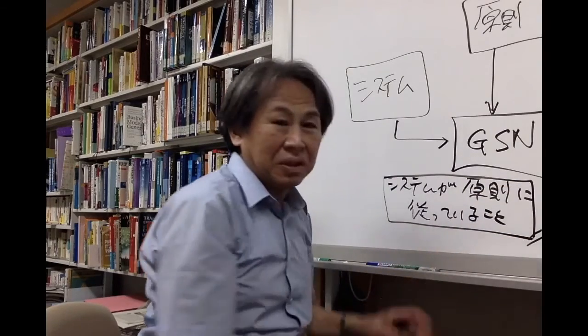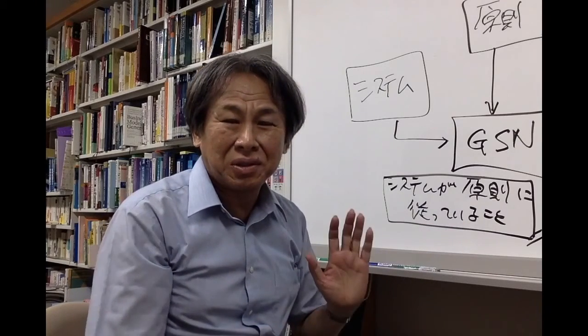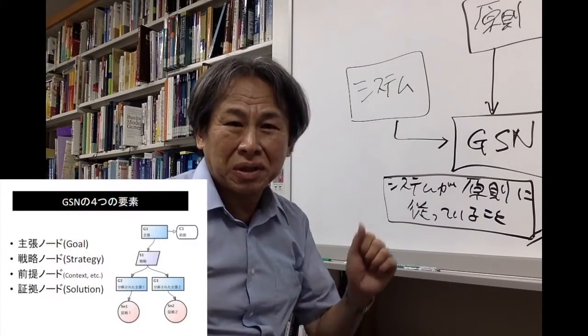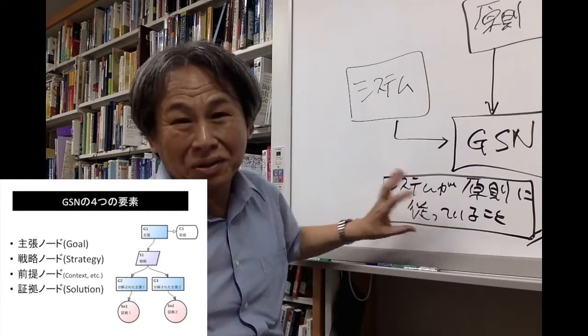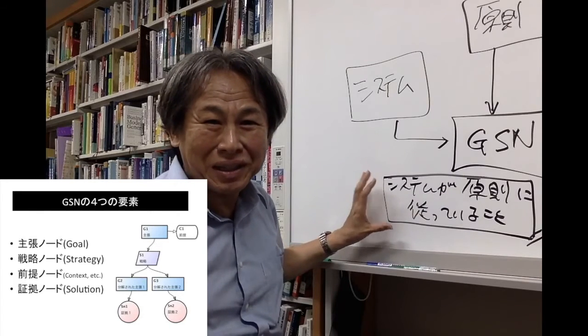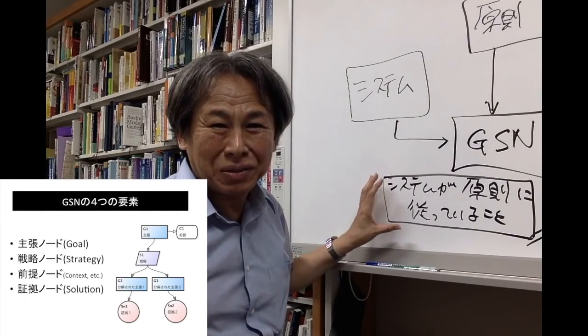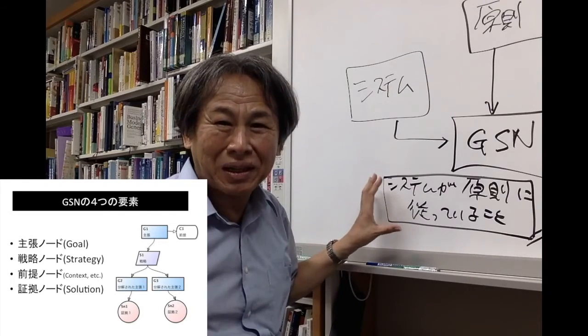In order to illustrate the argument visually, GSN provides four types of nodes. First, a goal — in this example, the statement "the system conforms to the principle" is the top goal, or claim.